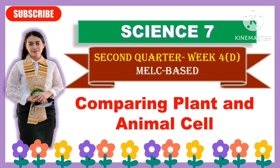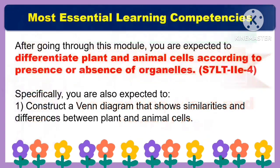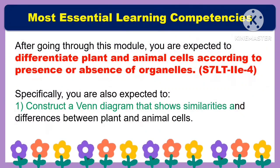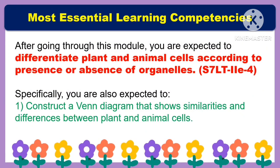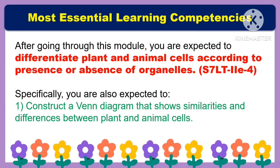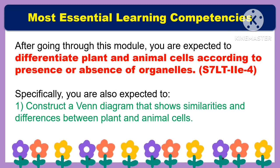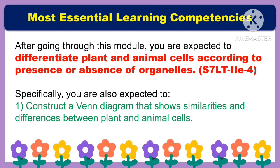This topic is MELC-based. For the most essential learning competencies, after going through this lesson, you are expected to differentiate plant and animal cells according to the presence or absence of organelles. Specifically, you are also expected to construct a Venn diagram that shows similarities and differences between plant and animal cells.